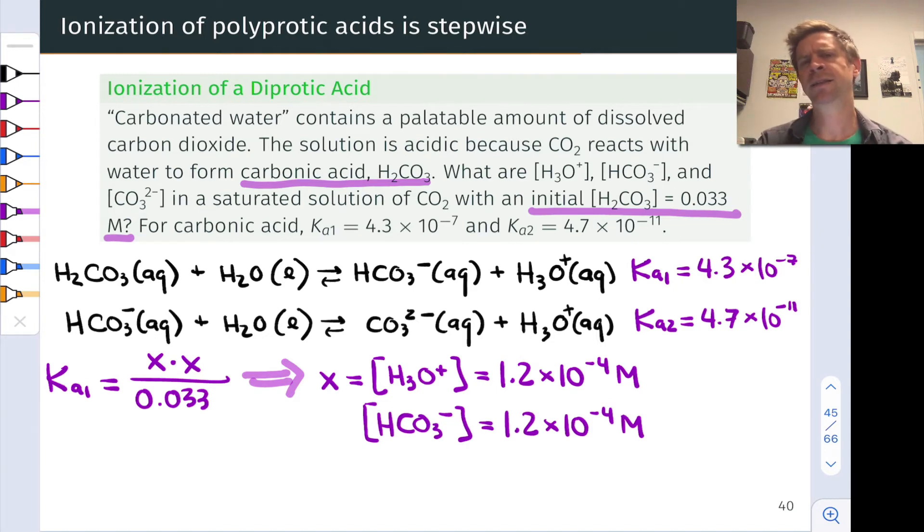So how do we find the concentration of carbonate from here? Well, now we need to think of bicarbonate acting as an acid and surrendering a proton to water to produce carbonate and hydronium ion, the second acid ionization equilibrium of carbonic acid.